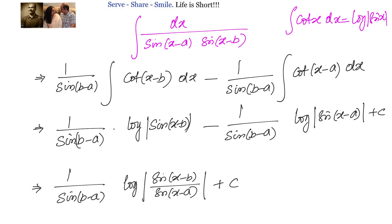Let's recap: we had to find the integral of 1 divided by sin(x-a)·sin(x-b). Since there is no standard formula, we noted that (x-a)-(x-b) = b-a is a constant, so we multiplied and divided by sin(b-a) and applied the sin(A-B) expansion in the numerator. After simplification we got 1 divided by sin(b-a) times [cot(x-b) minus cot(x-a)]. Applying integral of cot(x) = log|sin(x)|, the final answer is 1 divided by sin(b-a) times log of sin(x-b) divided by sin(x-a), plus C.